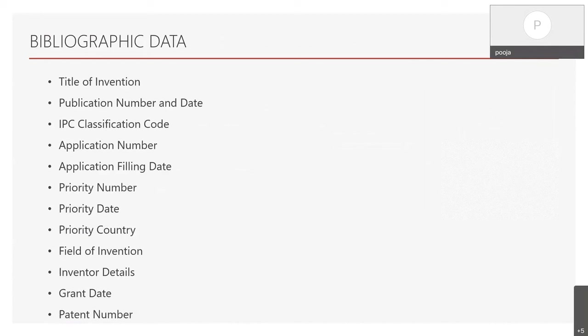As discussed earlier, the patent document has two types of data. The first one is bibliographic data, which is basically the basic data in relation to the invention. It covers various fields such as the title of invention, publication number and date, IPC classification code, application number, application filing date, priority number, priority date, priority country, field of invention, inventor details, grant date, and patent number.